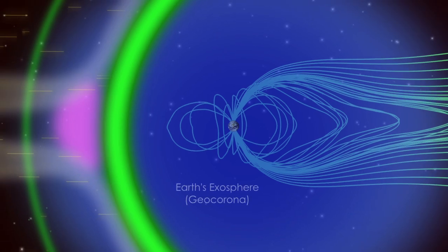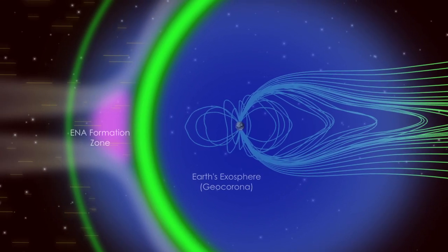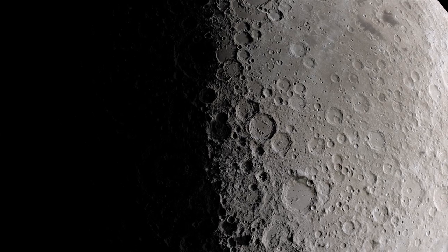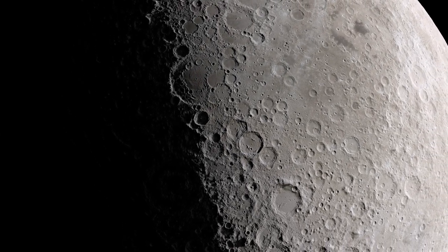Closer to home, IBEX has used ENAs to help understand the Earth's magnetosphere better, and has even observed the solar wind reflecting off the moon.